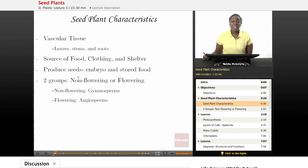Let's start by talking about seed plants and what characteristics all seed plants share. Seed plants are made of or contain vascular tissue, which is the tissue used to transport water, food, and nutrients throughout the plant. The vascular tissue is found throughout the leaves, stems, and roots.